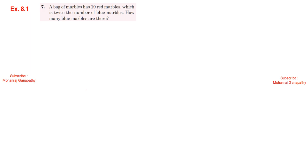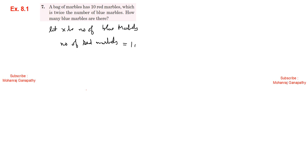Exercise 8.1, Sum number 7: A bag of marbles has 10 red marbles, which is twice the number of blue marbles. Number of red marbles equals 10, and that equals 2 times x. So x equals 10 divided by 2, giving x equals 5. Therefore there are 5 blue marbles.